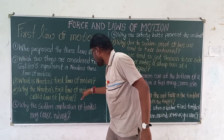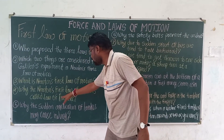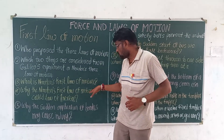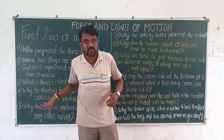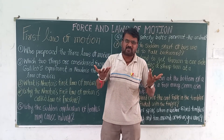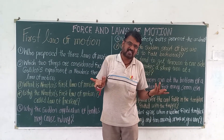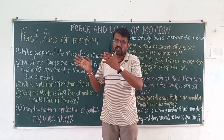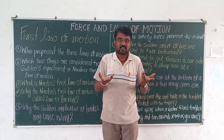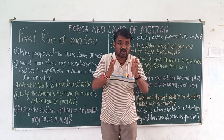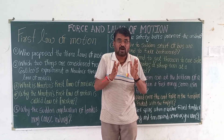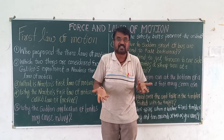Why is Newton's first law of motion called the law of inertia? Newton's first law says anything at rest stays at rest, anything in uniform motion stays in uniform motion. Inertia is the tendency of an object to resist the change in its position or speed. That tendency is called inertia.